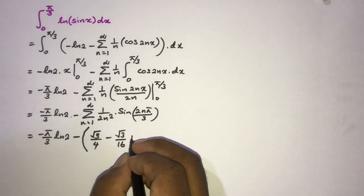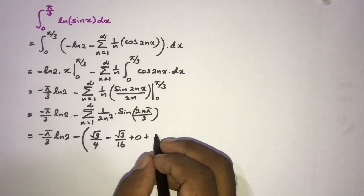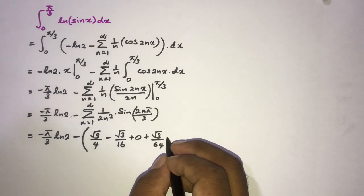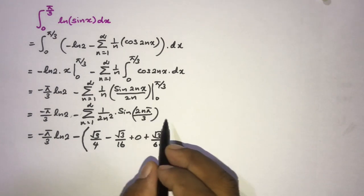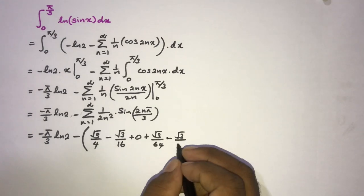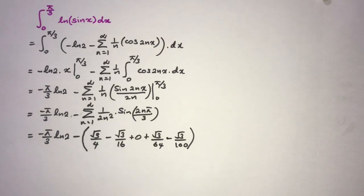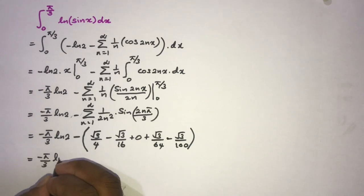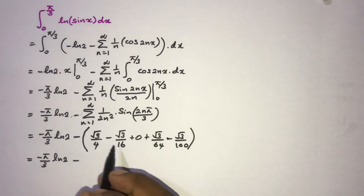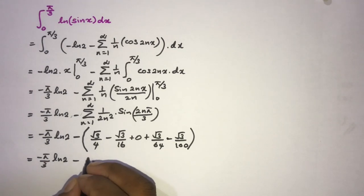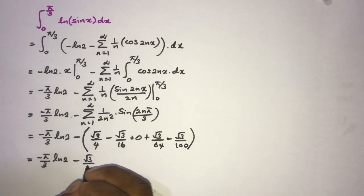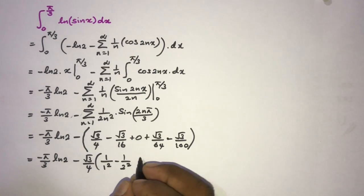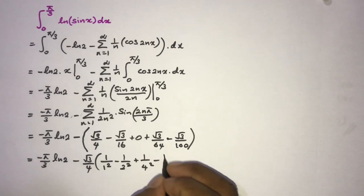For n=3 we get 0; for n=4 we get √3/64; for n=5 we get √3/100. Rearranging the series, we factor out √3/4 and write 1/1² - 1/2² + 1/4² - 1/5² + ...